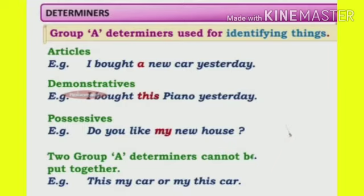Secondly, demonstratives. Example: 'I bought this piano yesterday.' In this sentence, 'this' is a determiner that precedes the noun 'piano'. It refers to the particular piano we are talking about. That's why 'this' is a determiner here.